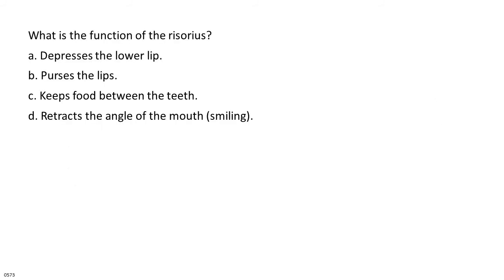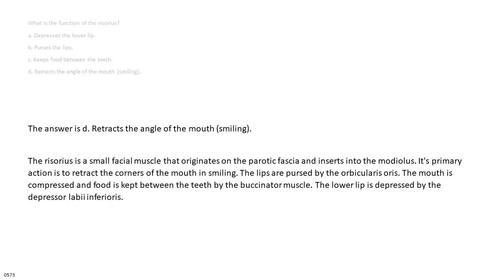What is the function of the risorius? A. Depresses the lower lip. B. Purses the lips. C. Keeps food between the teeth. D. Retracts the angle of the mouth — smiling. The answer is D, retracts the angle of the mouth — smiling. The risorius is a small facial muscle that originates on the parotid fascia and inserts into the modiolus. Its primary action is to retract the corners of the mouth in smiling. The lips are pursed by the orbicularis oris. The mouth is compressed and food is kept between the teeth by the buccinator muscle. The lower lip is depressed by the depressor labii inferioris.